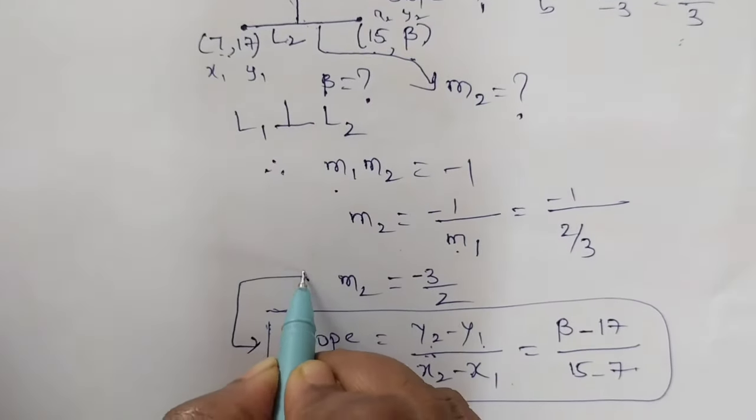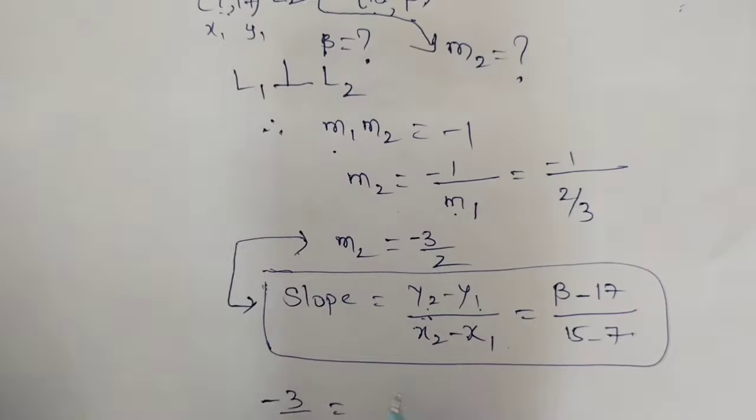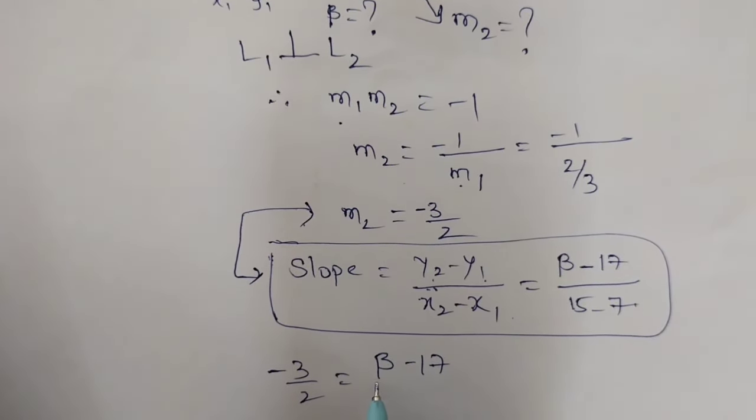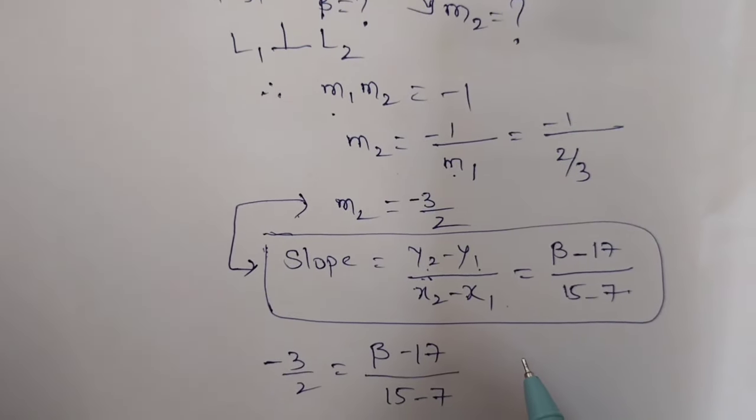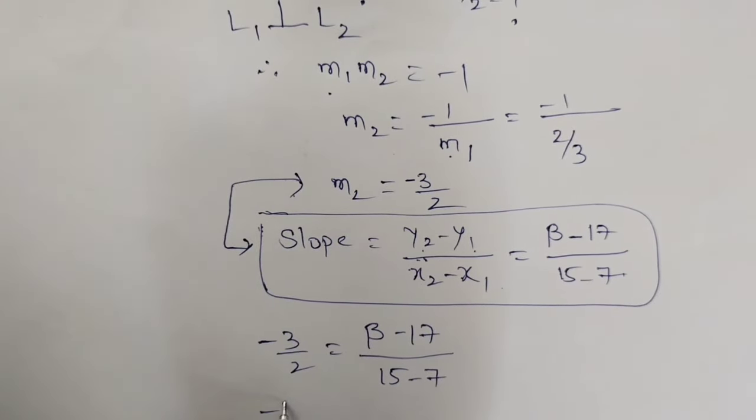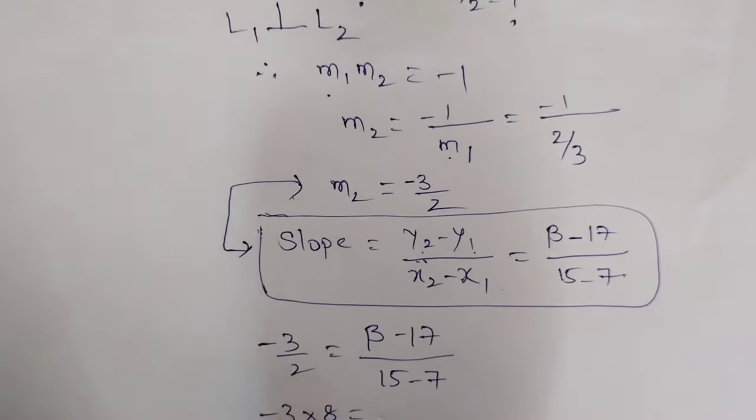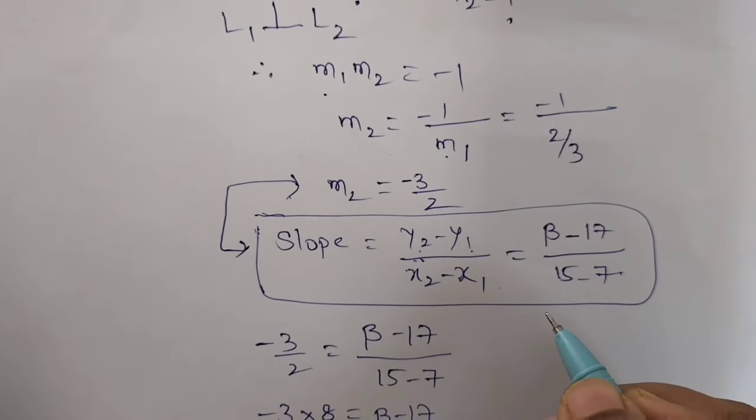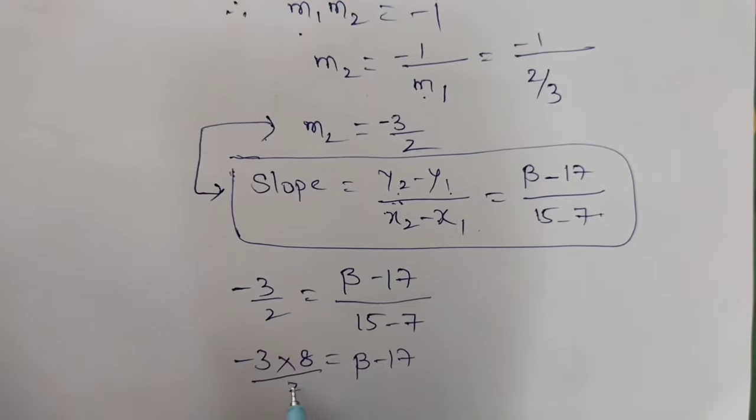And line 2 slope we got minus 3/2. Now we equate both slopes: minus 3/2 equals (beta minus 17) by (15 minus 7). Now cross multiply. 15 minus 7 is 8. We have denominator 2, this value here denominator is 2. Now cancel that 2 goes into 8 four times.